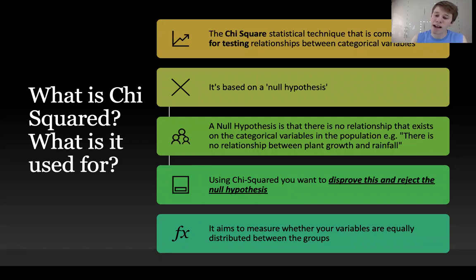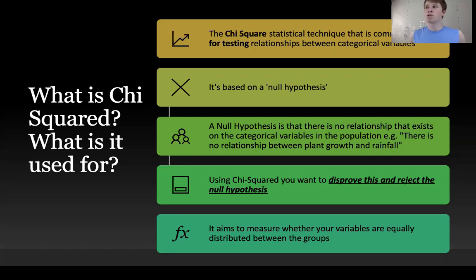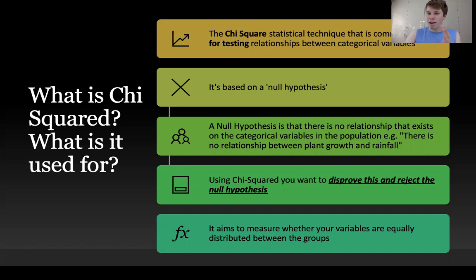Chi-squared aims to measure whether your variables are equally distributed between groups. Those groups could be anything — test results between different classes, the level of plant growth in different areas receiving different levels of rainfall. In the AQA syllabus, the only chi-squared question asked so far has been based on the rate of erosion near a coastline. It can be anything as long as you want to prove there is a relationship and test whether some areas are affected more than others.